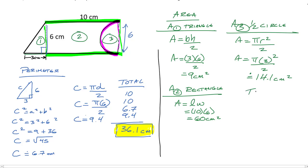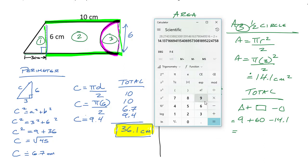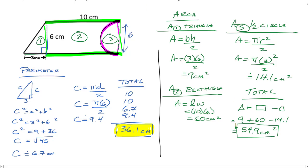Now for the total area we add the triangle and rectangle but subtract the half circle — because the semicircle is cut out of the shape. So: 9 plus 60 minus 14.1 equals approximately 54.9 centimeters squared. The moral is: sometimes you add shapes together, sometimes you subtract them.